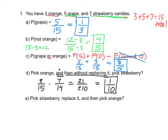Here's one more example. We're again going to draw two candies, but now this time, what's the probability that you pick a strawberry, replace it, and then pick an orange? Well, on my first draw I have all 15 candies and I want the probability we pick a strawberry, which is seven out of 15. Next, we want to get an orange, but we replaced it, so we still have all 15 candies. So now it's seven over 15 times three over 15, and that ends up being 21 over 225. Those both divide by three, and we end up with seven over 75.